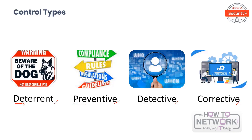Next is preventive. Preventive controls attempt to prevent unwanted events by inhibiting the free use of computing resources. Preventive controls are often hard for users to accept because they restrict free use of resources. Examples include security awareness, separation of duties, access controls, security policies and procedures, intrusion prevention systems, firewalls, and anti-malware.